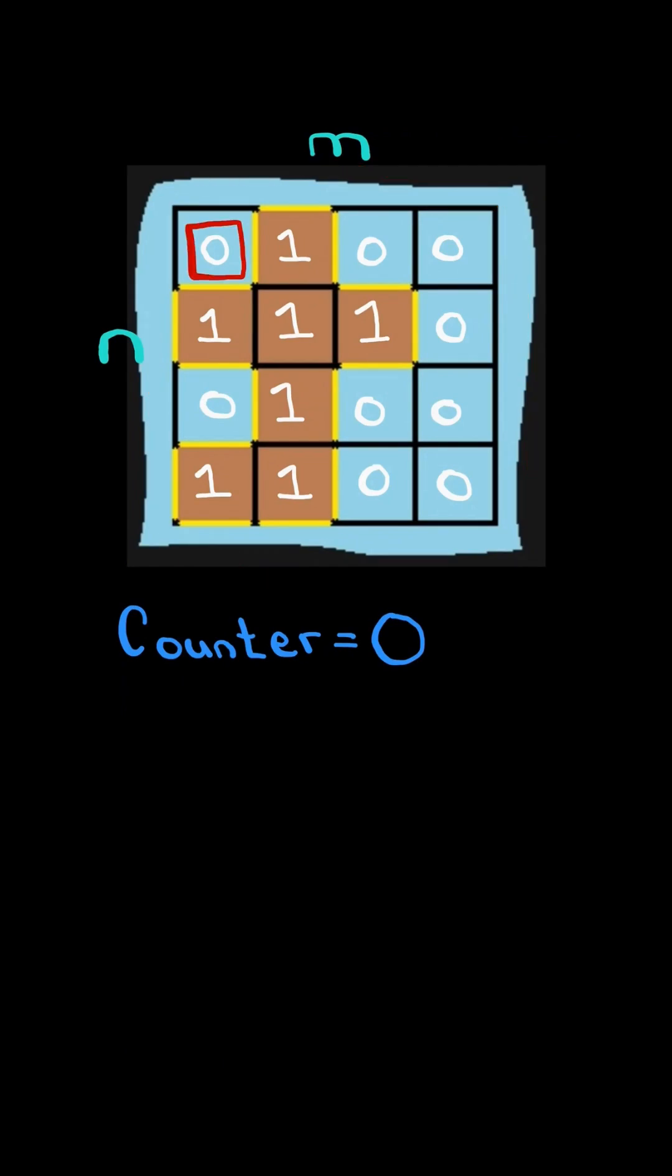If the value is a zero, we skip it. Now if the value is a one, then we need to check all the directions: left, right, up, and down.